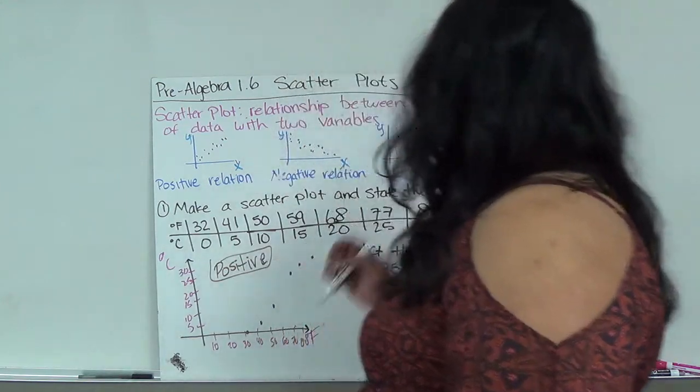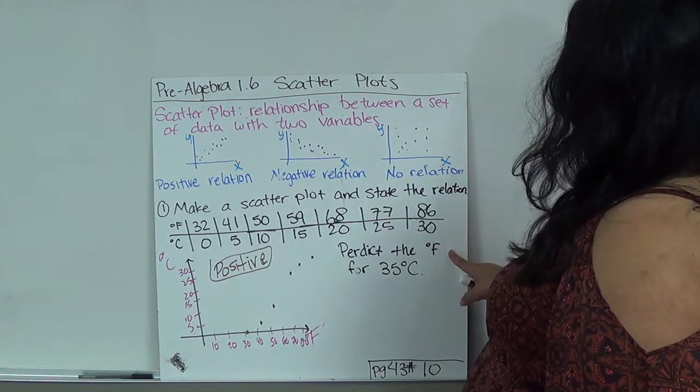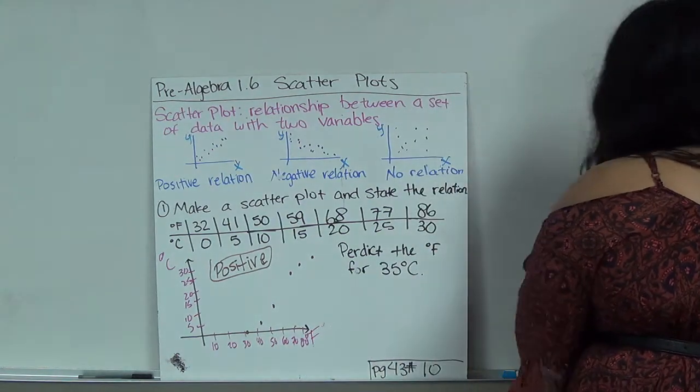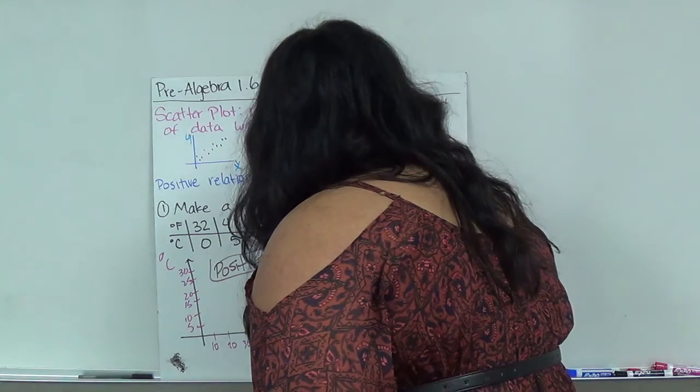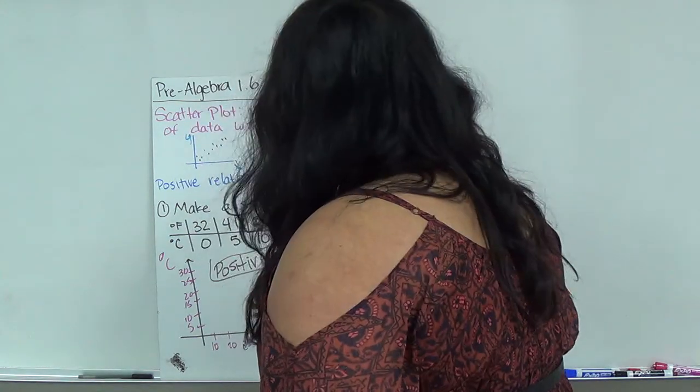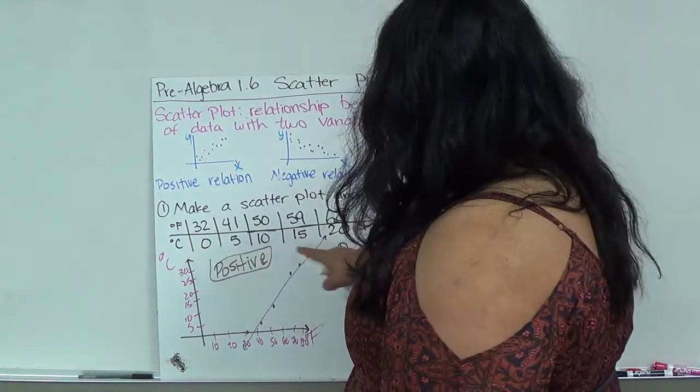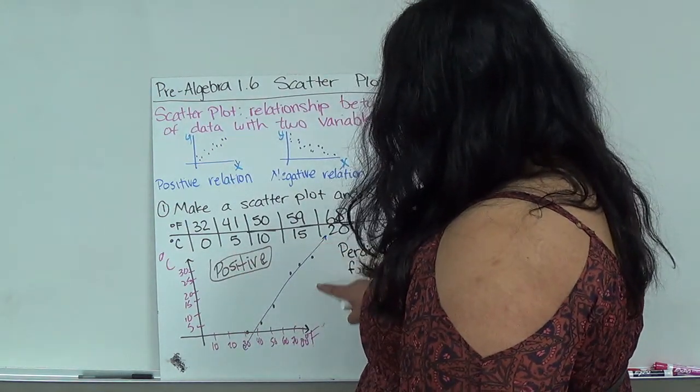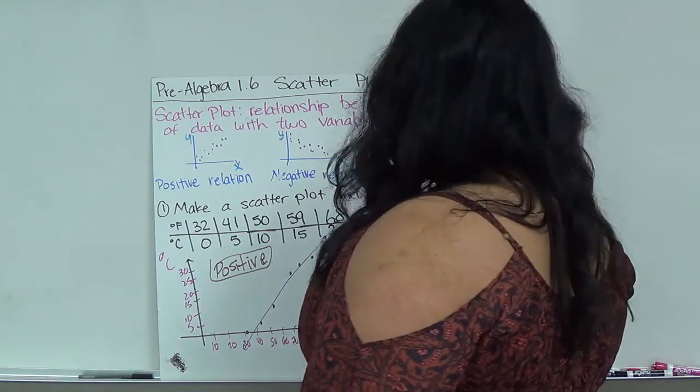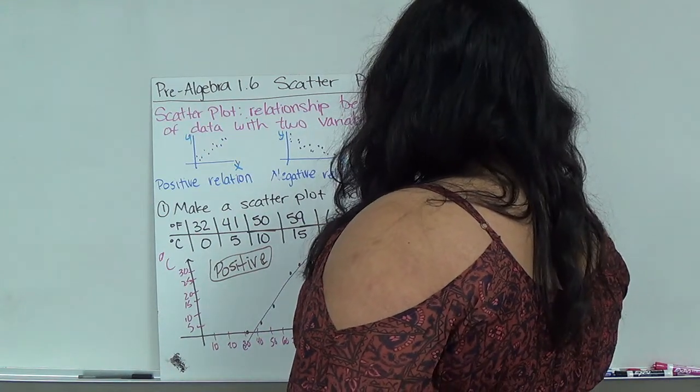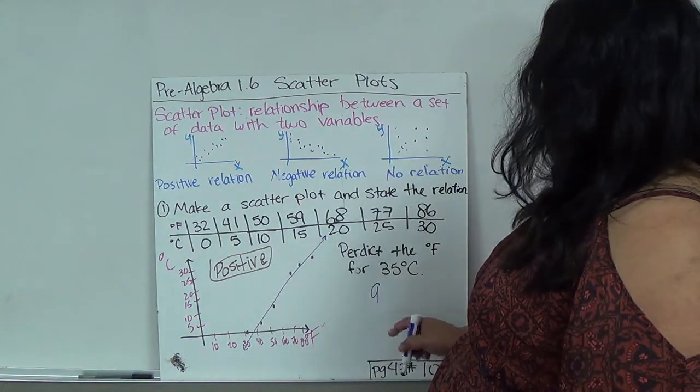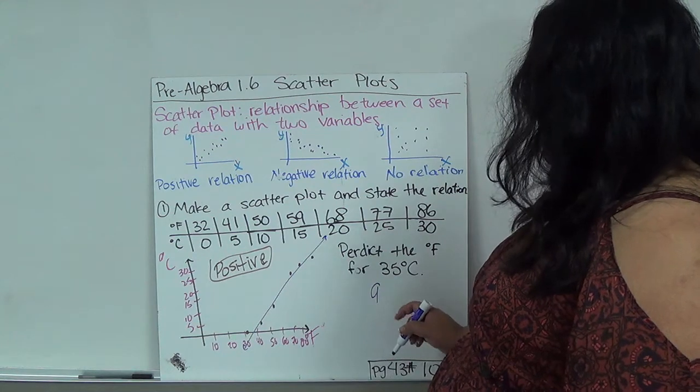And it says predict the degree Fahrenheit for 35°C. So if I were to draw like a line, and I see 35 here, it should be somewhere maybe in the 90s. I'm not gonna be exact, I can't predict the exact numbers but I know it's gonna be over 86, so I can do maybe 98.